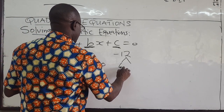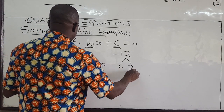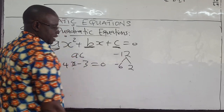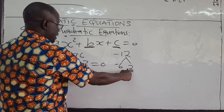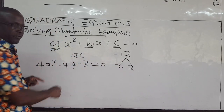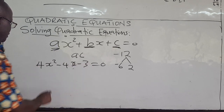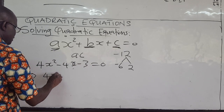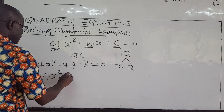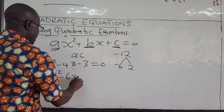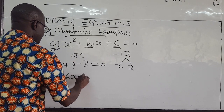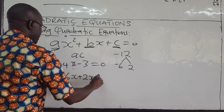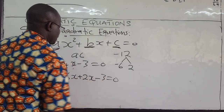You can use negative 6 and 2: negative 6 times 2 gives you negative 12, and negative 6 plus 2 gives you negative 4. So you can rewrite this as 4x² minus 6x plus 2x — using these values now — minus 3 = 0.